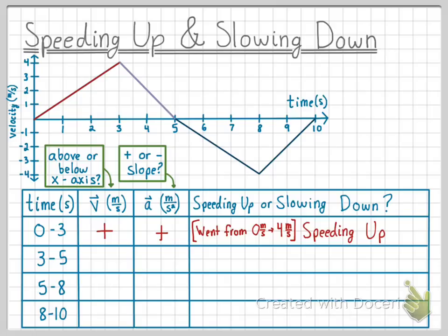Now let's analyze the time interval 3 to 5 seconds, which is this purple portion of the graph. The graph is above the x-axis, so we know the velocity is positive, and the line now has a negative slope, so we know there is a negative acceleration. During this time interval, it begins with a velocity of 4 meters per second and ends with a velocity of 0 meters per second, also known as rest. Since it started with a velocity and ended at rest, we know that the object was slowing down.